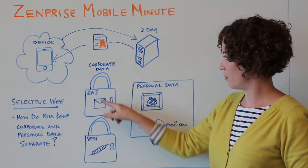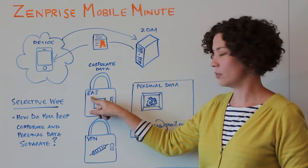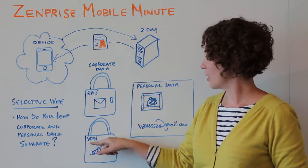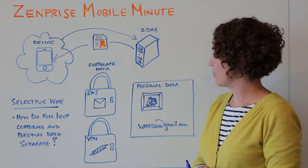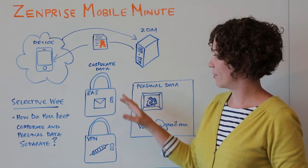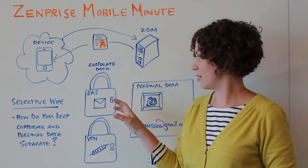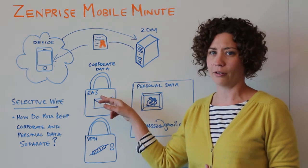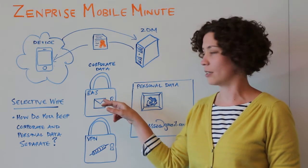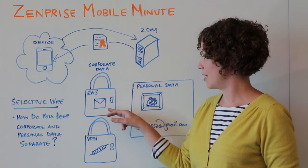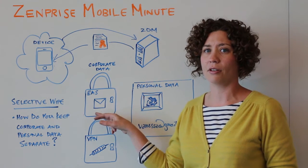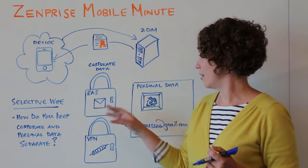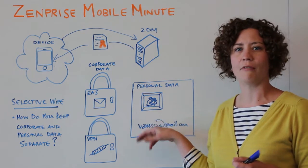For example, we have an Exchange ActiveSync package here and a VPN package here. The concept of containerization is important here because not only are we provisioning the profile — how to talk to the Exchange server — we're also keeping the data at rest secure on the device. That's in an encrypted package and it's kept separate from the photos and from Gmail.